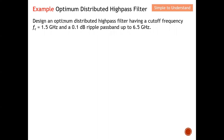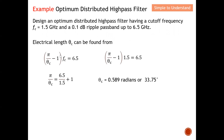It's always good to start with an example so everything is clearer. The example asks us to design an optimum distributed high pass filter with a cutoff frequency of 1.5 GHz and a 0.1 dB ripple passband up to 6.5 GHz. This 6.5 GHz can be considered the upper cutoff frequency — as mentioned earlier, a high pass filter won't pass indefinitely; the decay in this case will be at around 6.5 GHz. Now, how do we calculate the electrical length? The key is to substitute the given cutoff frequency of 1.5 GHz into the formula.